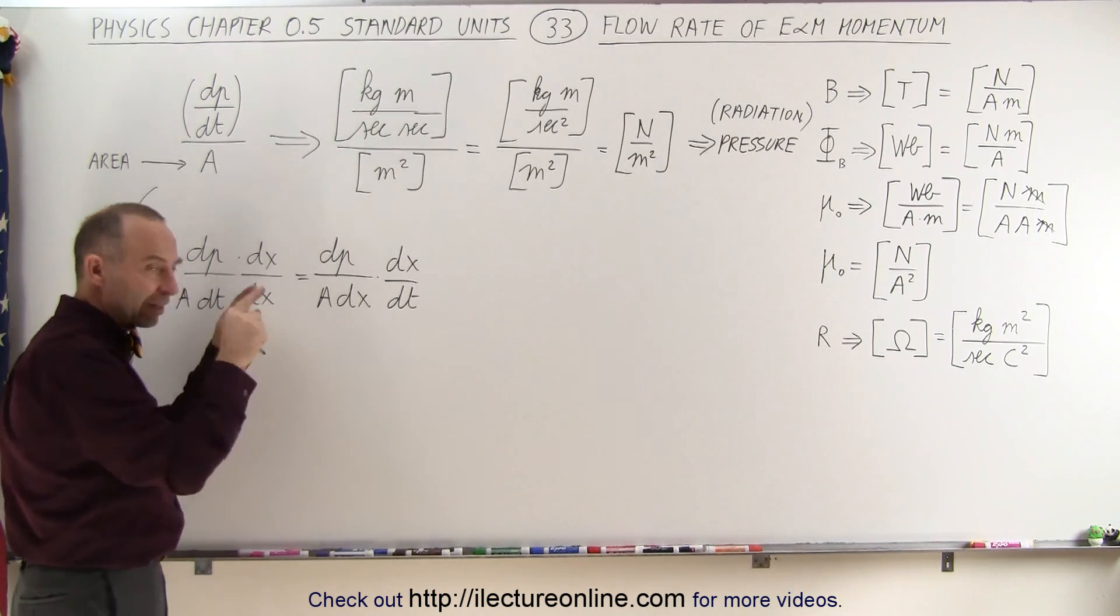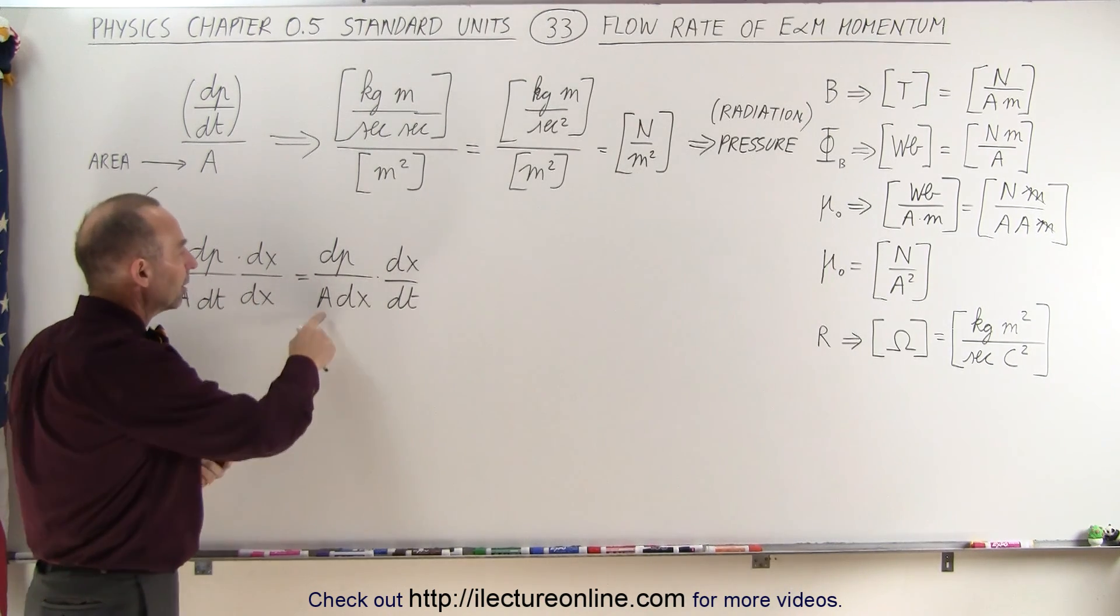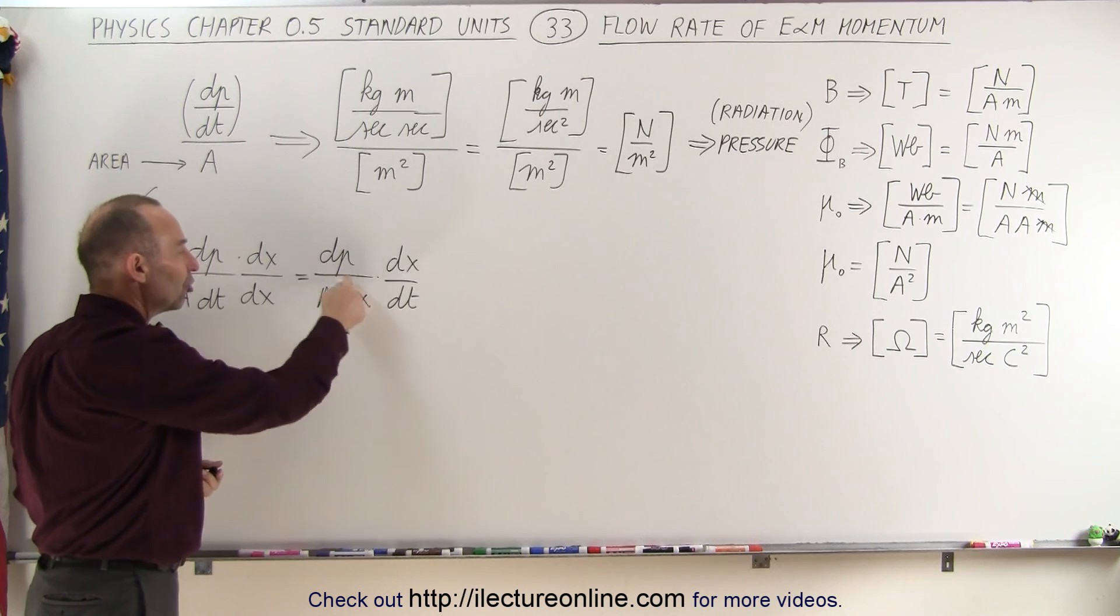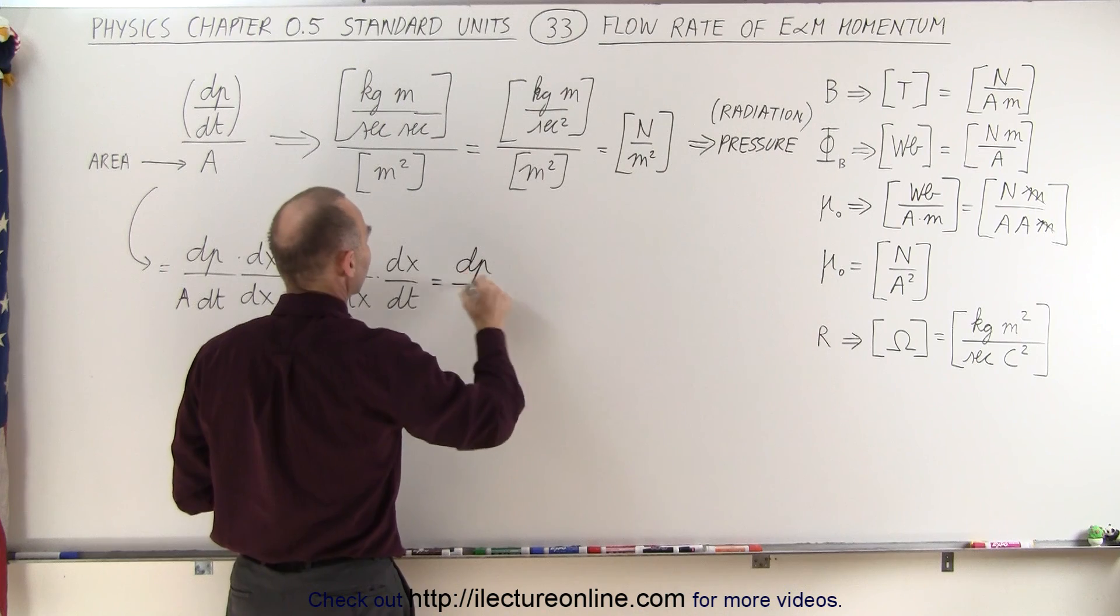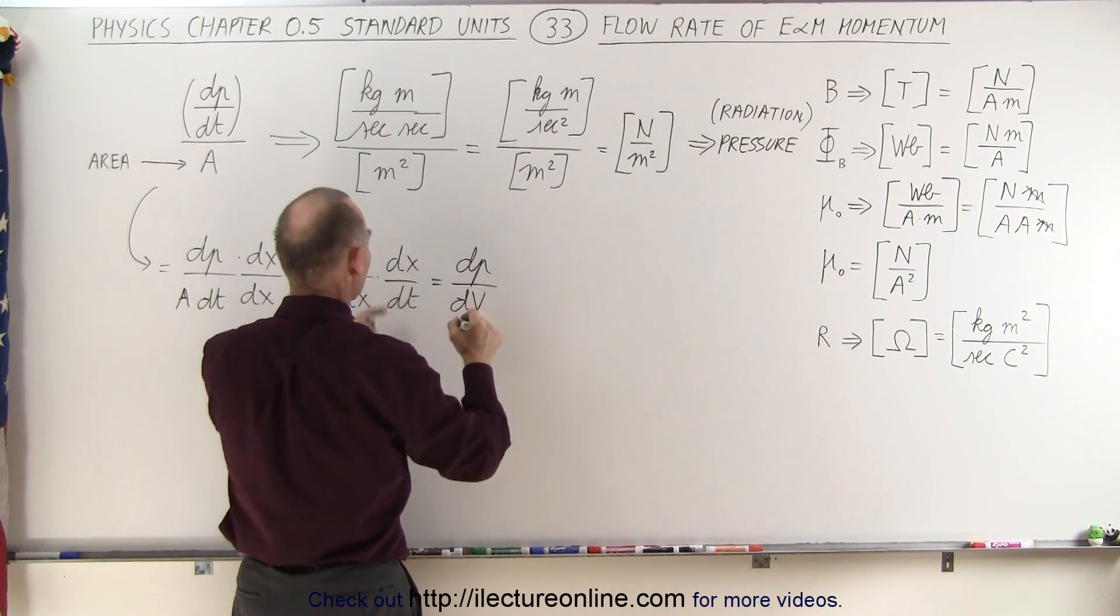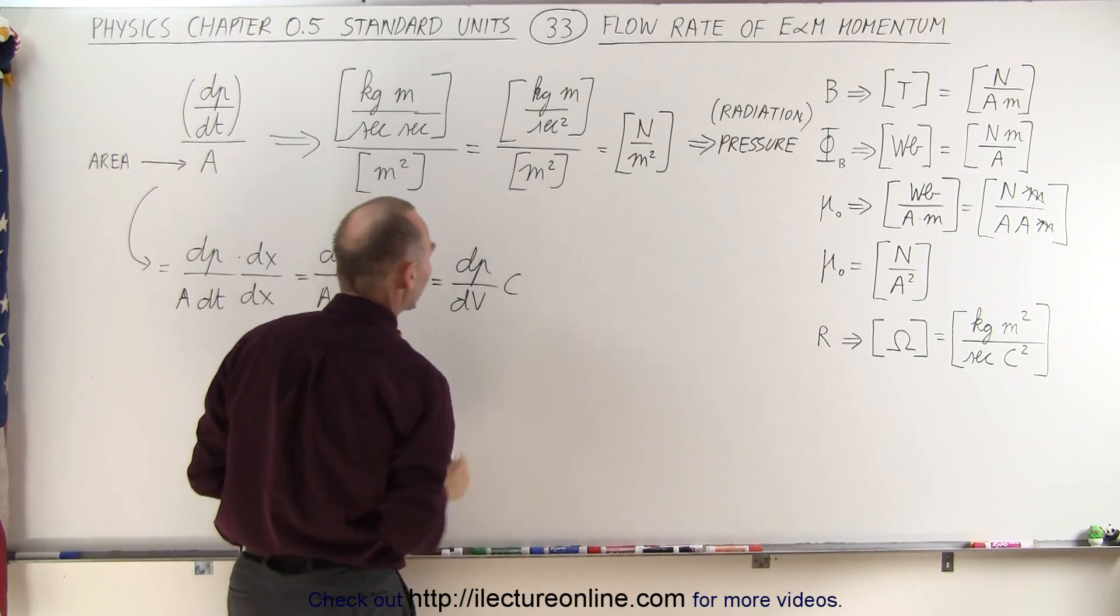Area, which is a fixed quantity like per unit area, times dx—well that would be a change in volume. So this can now be written as dp divided by dV times dx/dt, which is the speed of light.